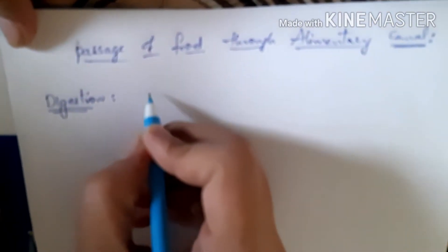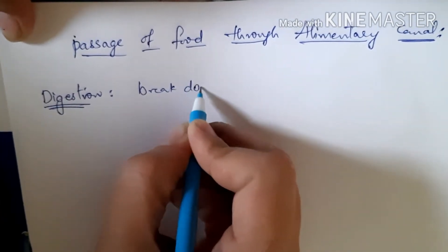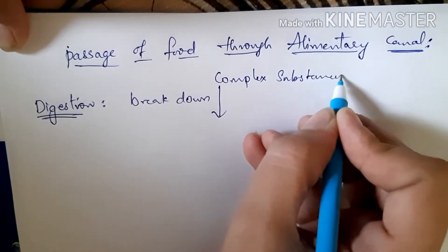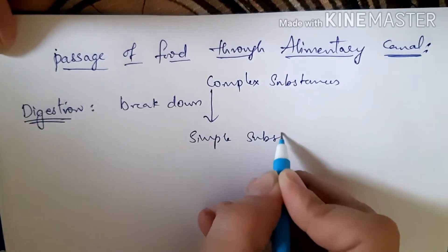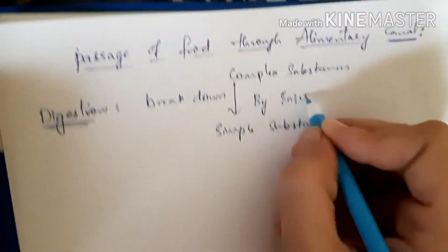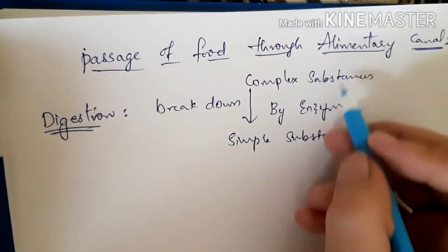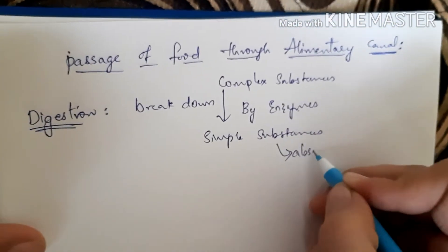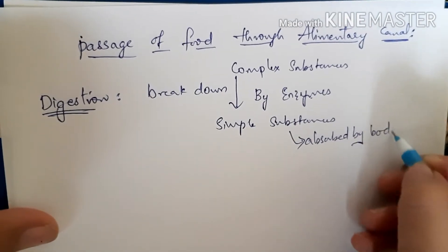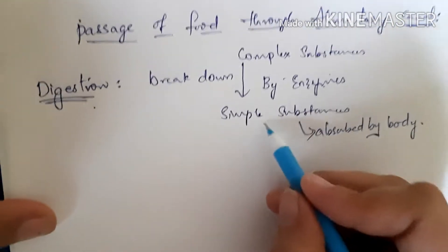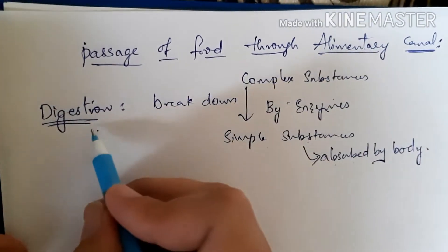First, let us see what is digestion. Digestion is the breakdown of large, complex substances of food into simple substances by the action of enzymes. These simple substances are later absorbed by the body. This process is called the process of digestion.